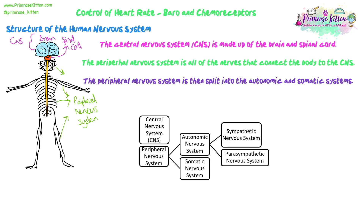If you remember from doing our reflex arc, the brain and the spinal cord coordinate all of your responses. So when we're talking about nervous responses and nervous control in the body, your brain and spinal cord are coordinating all of those responses, and then the nerves is what we're sending the impulses along. So we have our central nervous system and then we have our peripheral nervous system.